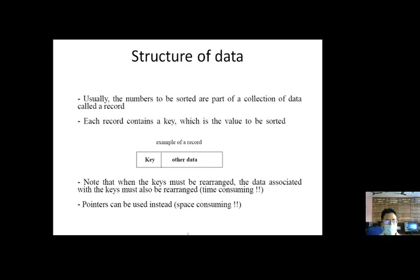Note that when the key must be rearranged, the data associated with the key must also be rearranged. So when we arrange the data, the data is actually arranged as per the order of the keys. The location of the data is used to arrange the order of the data, so we sort the data on the basis of some key value and these key values are arranged in a sequence.